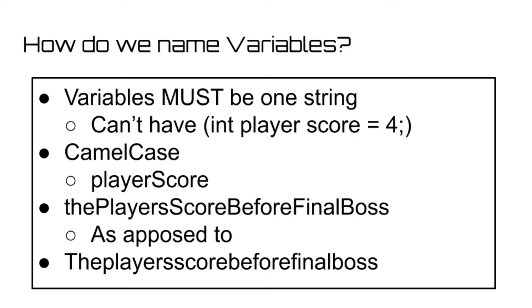All programmers have their own conventions when it comes to naming variables, but the one that we will be using on this channel is called camel case, which is the process of not capitalizing the first word of your variable, but capitalizing every word that follows it. Going back to the player score example, the variable would be called playerScore, with the P in player not capitalized and the S in score capitalized. This allows us to easily identify each word and becomes really useful for long variable names, such as thePlayersScoreBeforeFinalBoss.